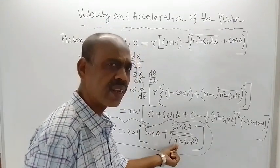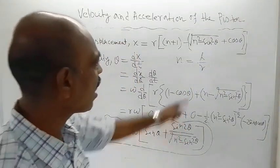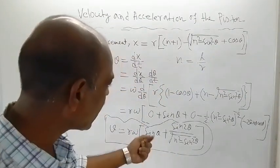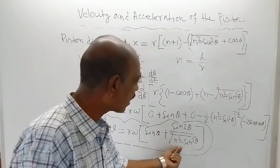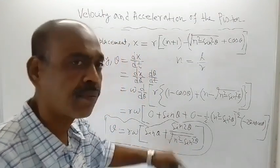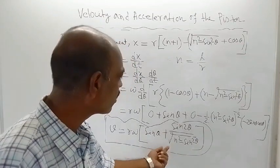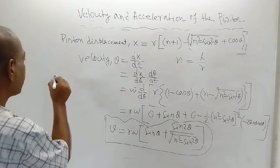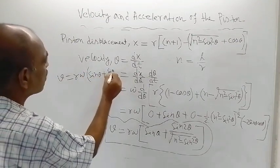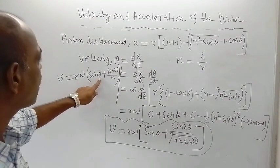Now, if n = L/R is very, very large compared to R, then n is a large quantity. Therefore, sin²θ can be neglected compared to n². In that case, √(n² - sin²θ) ≈ √(n²) = n. So the expression simplifies to: V = R·ω·(sinθ + sin2θ/n).